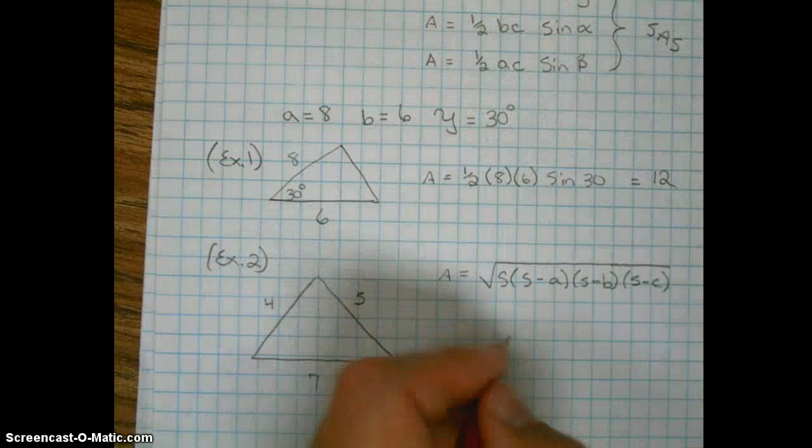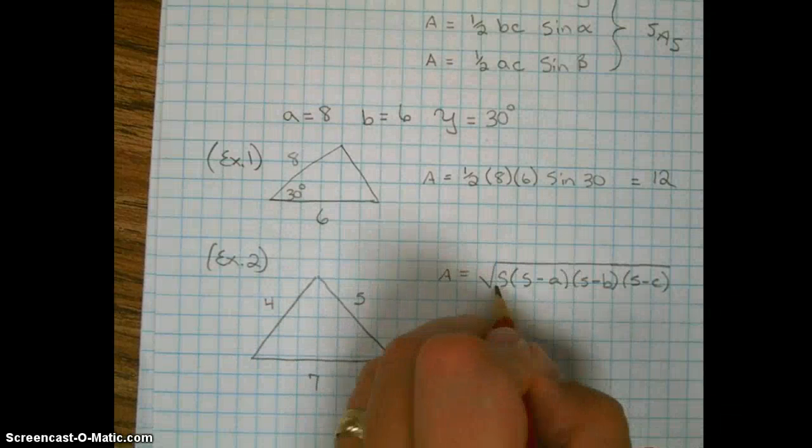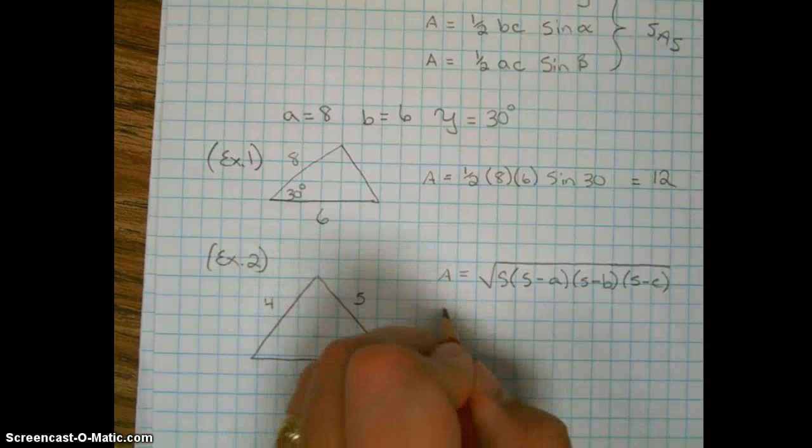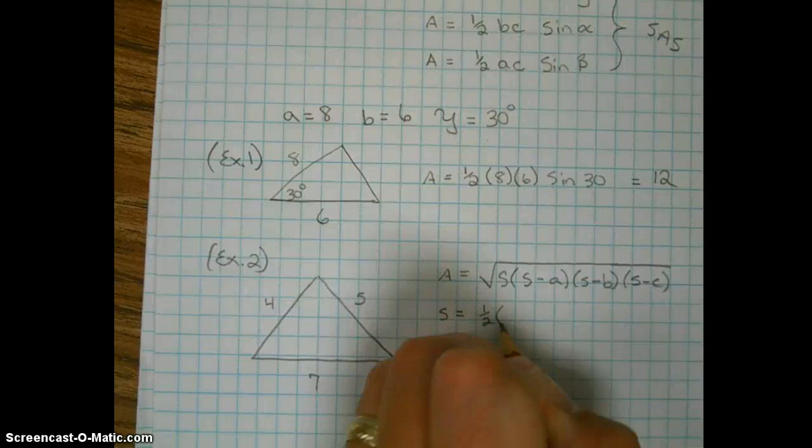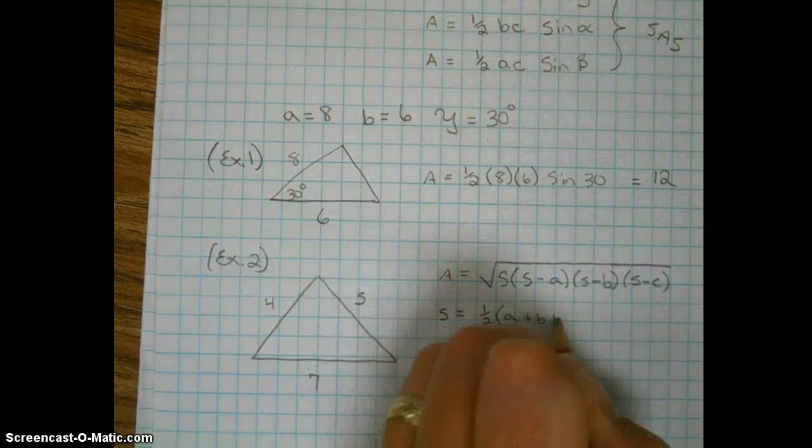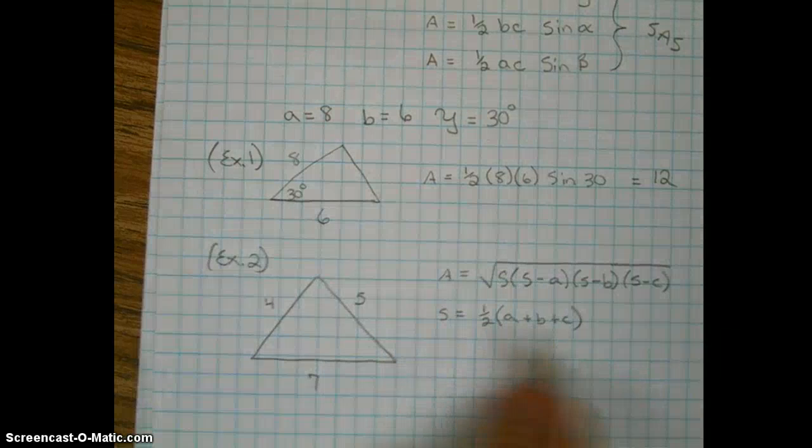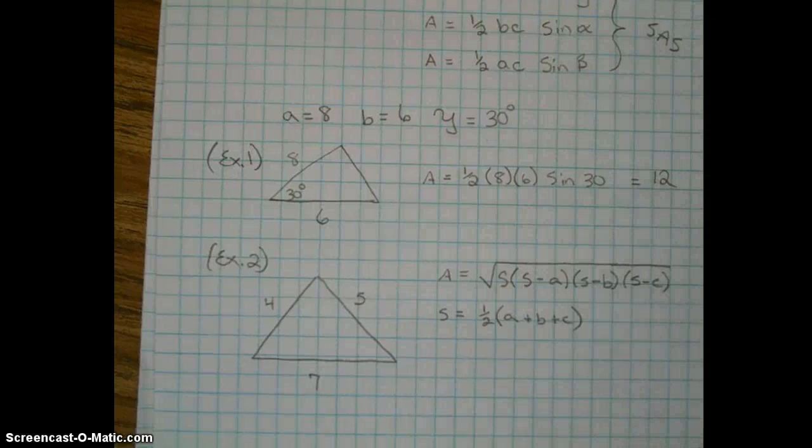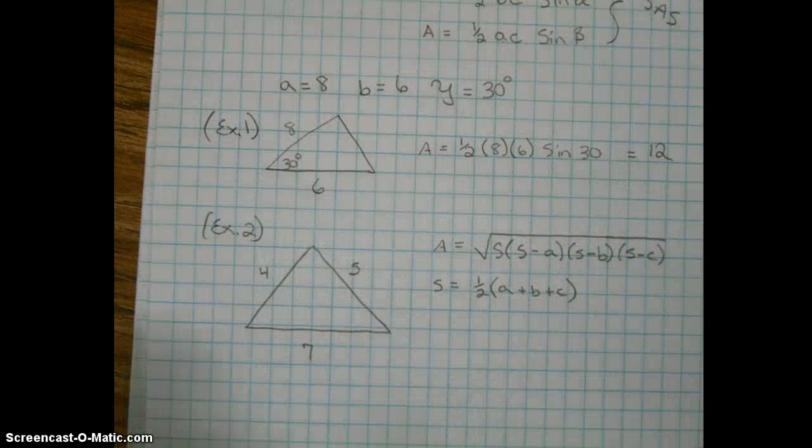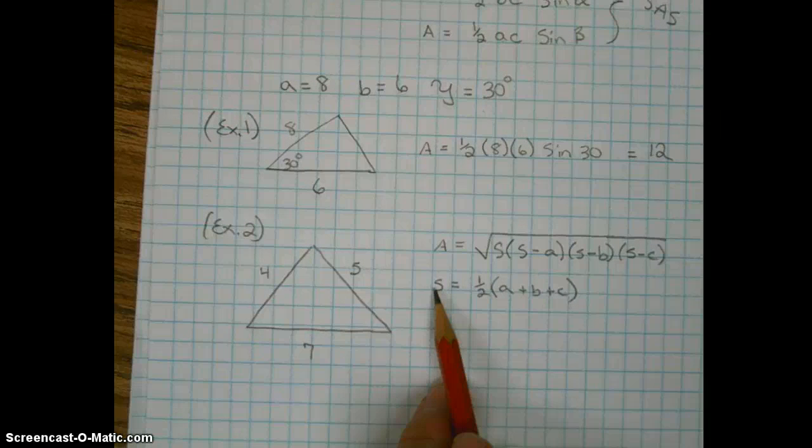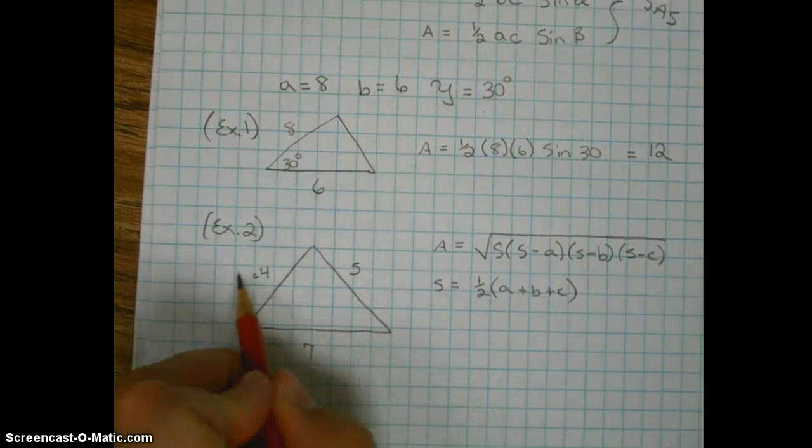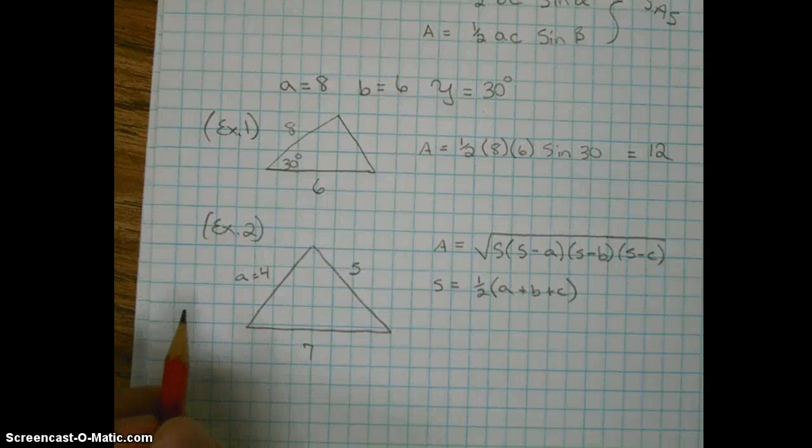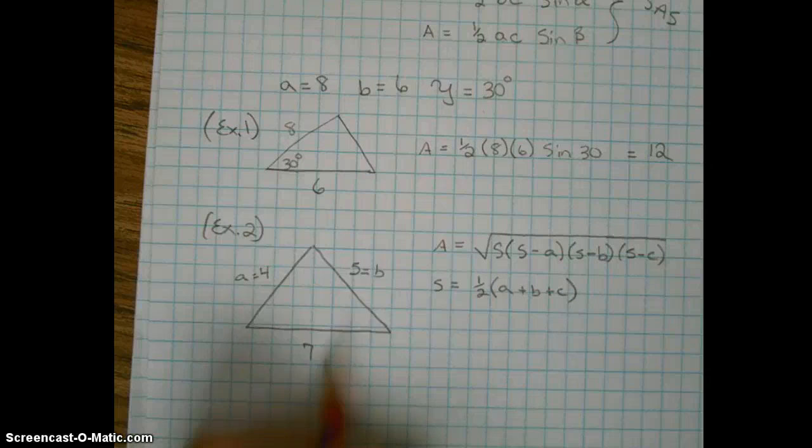To figure out what, this is little s, not capital S. Little s is going to be equal to one-half A plus B plus C. So we're going to need to do this little calculation first. So let's take a look at this example. Let's find out what S is. So let's plug in A, B, and C. So we'll just say that this is A, B, and C.